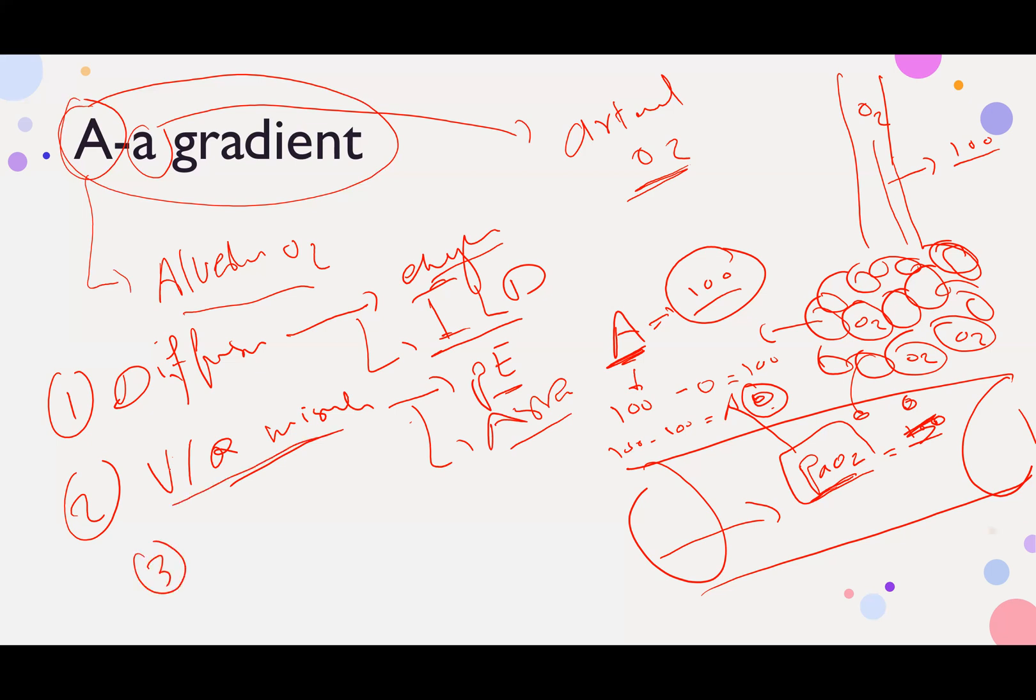VQ mismatch is ventilation-perfusion mismatch. It's a problem with ventilation or perfusion. Either the lung doesn't have blood or the lung is not ventilated well.